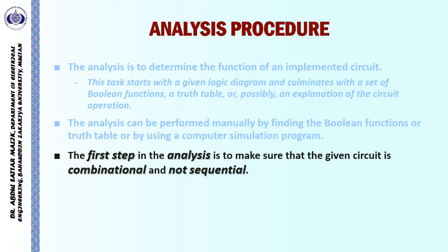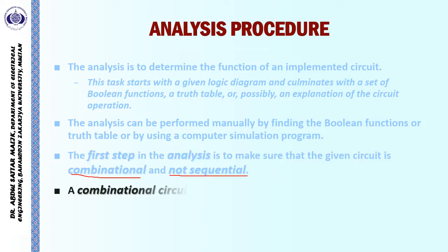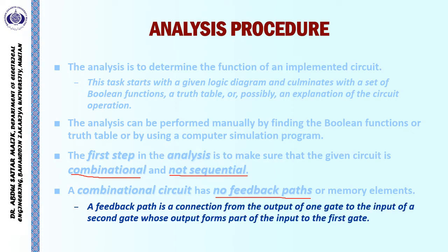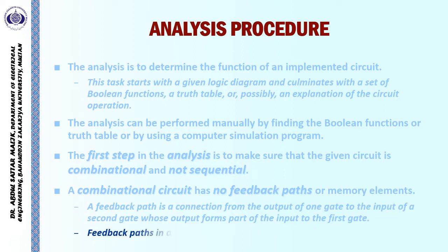The first step in the analysis is to make sure that the given circuit is combinational and not sequential. A combinational circuit has no feedback paths. A feedback path is a connection from the output of one gate to the input of the second gate whose output forms part of the input to the first gate. Feedback paths in a digital circuit define a sequential circuit.